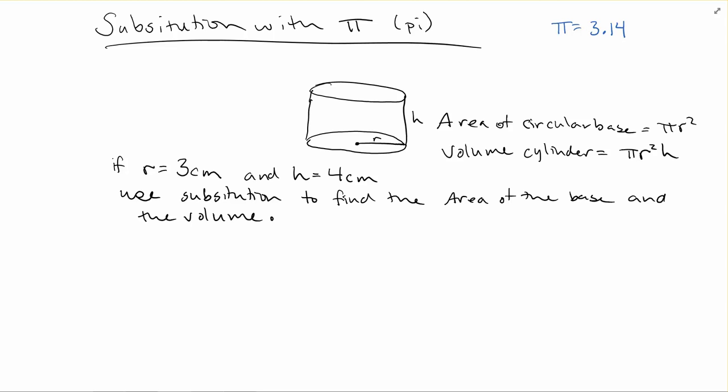So that's what I'm going to show you. If you've got a cylinder, the area of the circular base is just the area of a circle, πr². The volume of that cylinder would be the area of the base times the height, so πr²h.